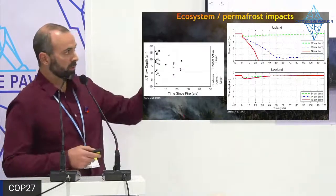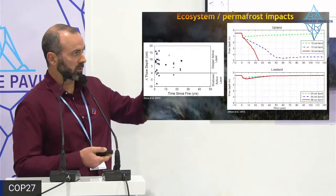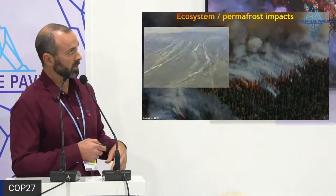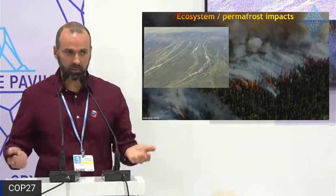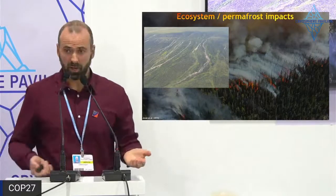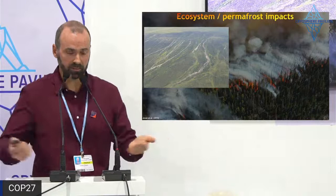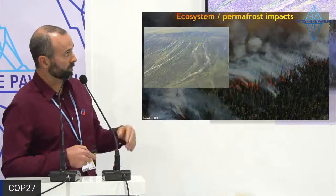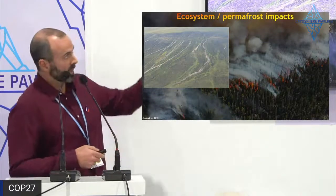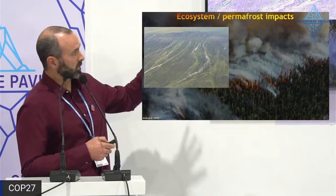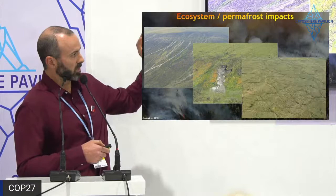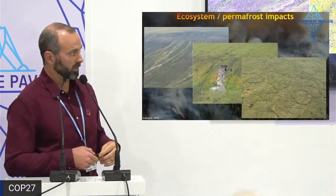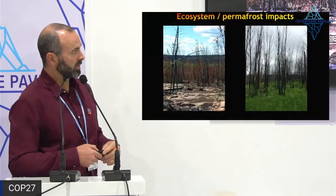In lowland systems it's more buffered and resilient — even deeper burns don't necessarily result in complete thawing. We do have observational evidence of abrupt thaw after fire. Photos from Jones et al. 2015 of the Anaktuvuk River fire on the North Slope of Alaska show braided detachment slides, retrogressive thaw slumps, and ice wedge degradation — all kinds of abrupt thaw events occurring after fire in ice-rich permafrost.